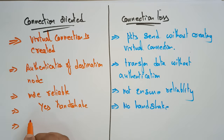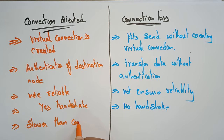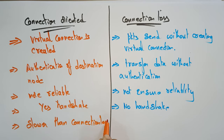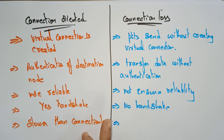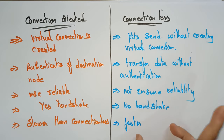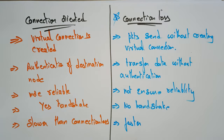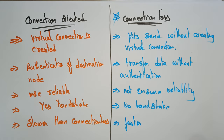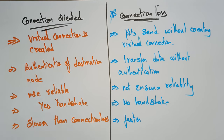Regarding delay, connection-oriented is slower than connectionless, because connection-oriented has to check the virtual connection before transmitting data and also authenticate the destination. Whereas connectionless is faster when compared to connection-oriented. That is the main advantage of connectionless — when transferring data over a long distance with higher speed, people will choose connectionless over connection-oriented.